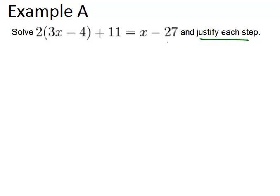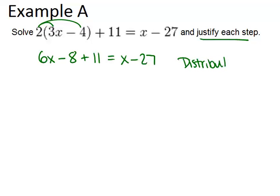So if we want to solve this equation, the first thing that I would do is distribute in order to get 6x minus 8 plus 11 equals x minus 27. And there we just used the distributive property of equality.